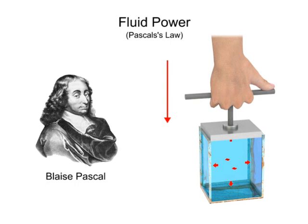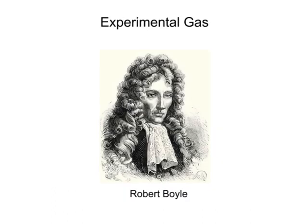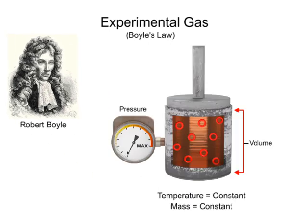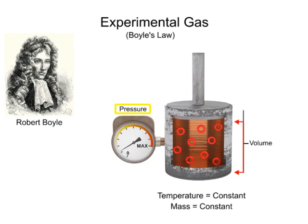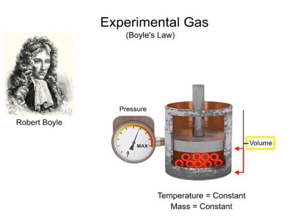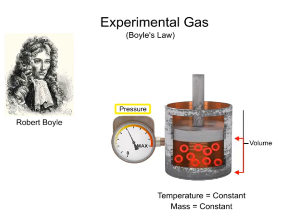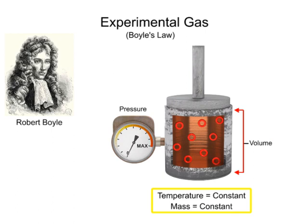Another important property of fluid mechanics was discovered in the late 1600s by Robert Boyle, an Irish physicist. Boyle's Law is an experimental gas law which describes how the pressure of a gas increases as the volume of gas decreases. A modern statement of Boyle's Law is: the absolute pressure of a confined body of gas varies inversely as its volume, provided its temperature remains constant.